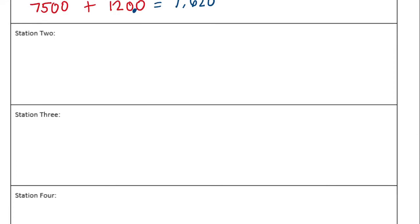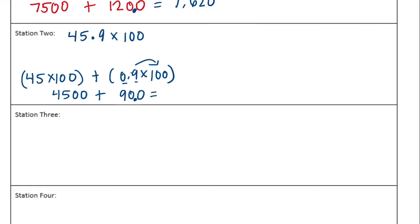Station two: calculate the product of 45.9 times 100. We could do this easily by moving the decimal point two places, but that's not really what they're wanting. We're going to do 45 times 100 plus 0.9 times 100. 45 times 100 is 4,500 plus 0.9 times 100. 9 times 100 is 900, but we need to divide by 10 because it's 9 tenths, so we get 4,590, which is what we could have gotten by moving the decimal point two places to the right.